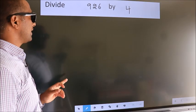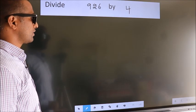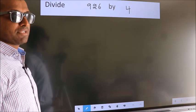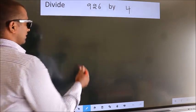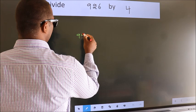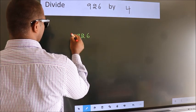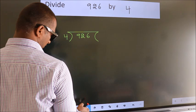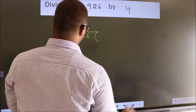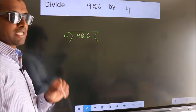Divide 926 by 4. To do this division, we should frame it in this way: 926 here, 4 here. This is your step 1.